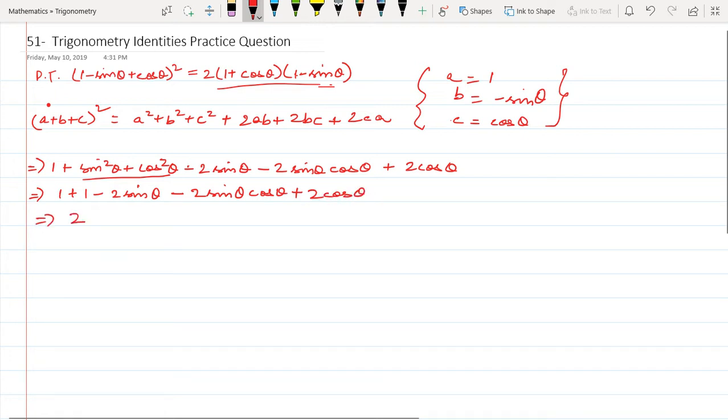This will become equal to 2, I get 1 minus sin theta, common from the first two terms and if I take a minus of 2 cos theta, if I take a plus 2 cos theta,